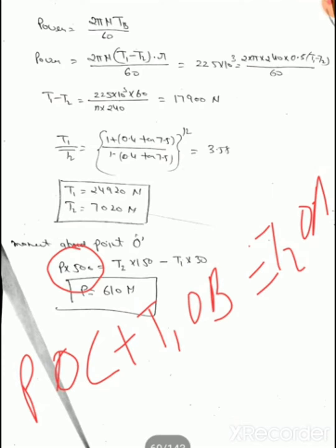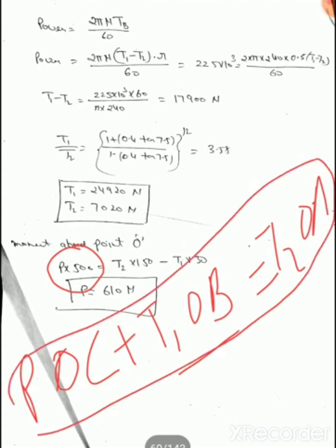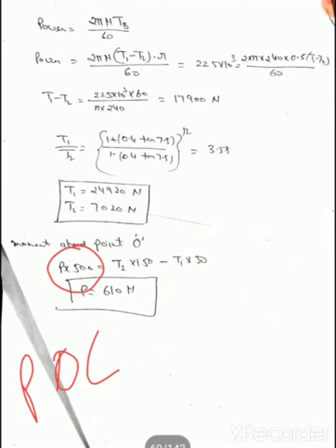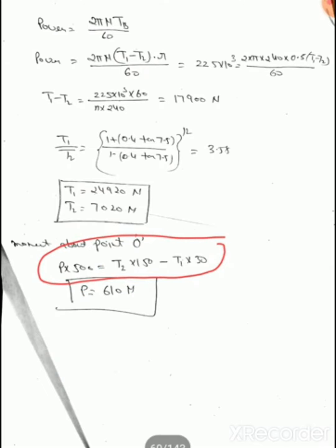Taking moments about O: P × OC + T1 × OB = T2 × OA. Substituting: P × 500 + T1 × 30 = T2 × 150. Therefore P × OC = T2 × OA - T1 × OB. Solving with T1 = 24920 N and T2 = 7020 N gives P = 610 N. This is the minimum load required for absorbing the power of 225 kW.